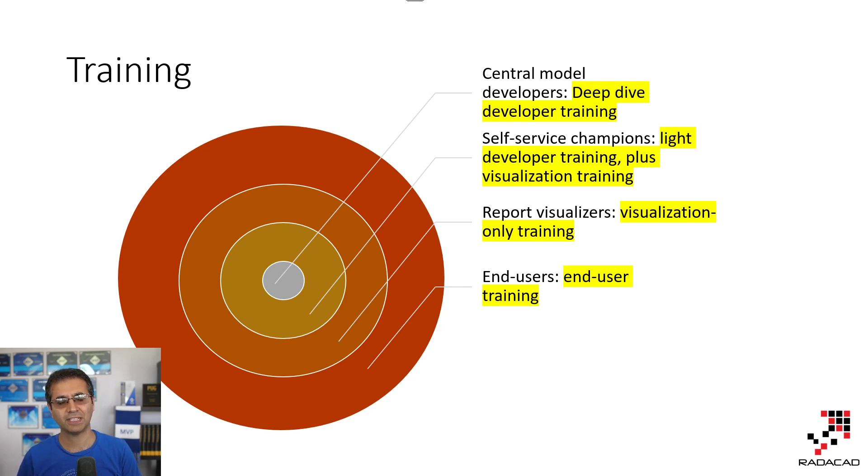Self-service champions, they need more training than report visualizers. So they basically need everything that the report visualizers need, plus modeling training, DAX, and also the Power Query training, because these are a group that are going to deal with the data model. So they need some training on that, which normally we have training options about a week for this group.